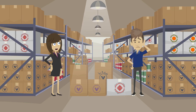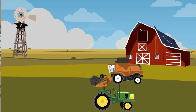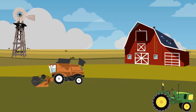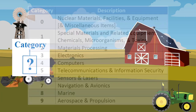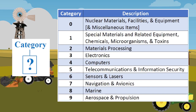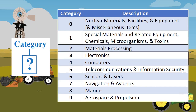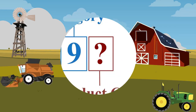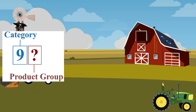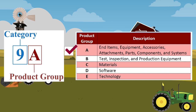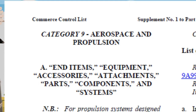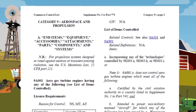Maybe it would be helpful to walk through an example or two. I have a couple of diesel engines for farm equipment that I'd like to send to Mexico. The first step is to determine which of the ten categories the diesel engine would fall under. Category 9 covers propulsion, so that's a good start. Now that we have the category, we need to determine the product group. The engine would seem to fit in the end item and equipment grouping, so it's likely in Product Group A. Now we can start reviewing ECCN entries at the beginning of 9A of the Commerce Control List.